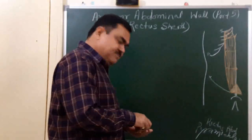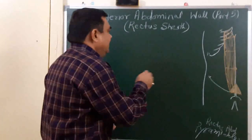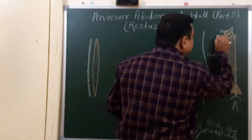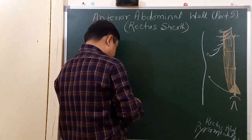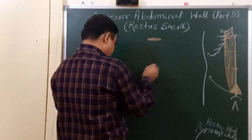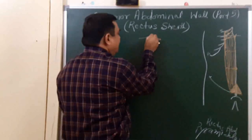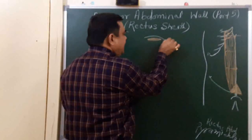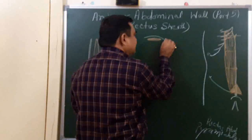We will discuss the arrangements of the sheath. Here, if you cut a transverse section at this level, you will find the rectus abdominis muscle. Here is the external oblique aponeurosis, and here is the linea alba. This label is the xiphoid process.